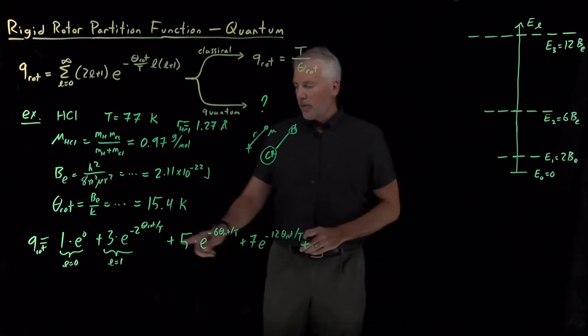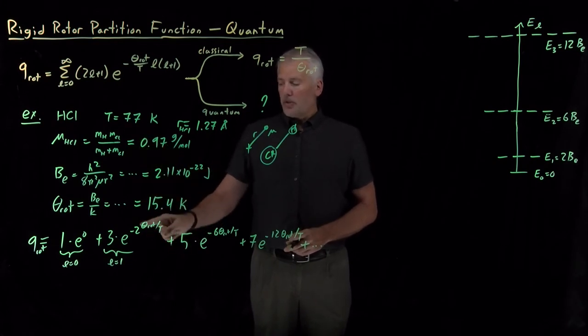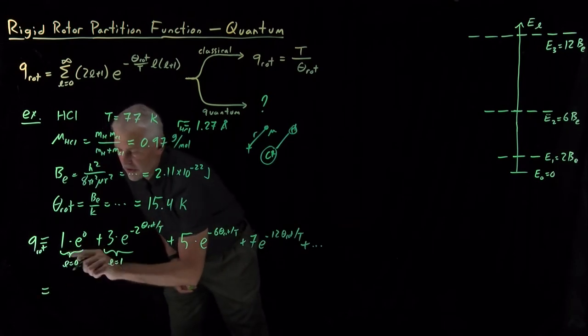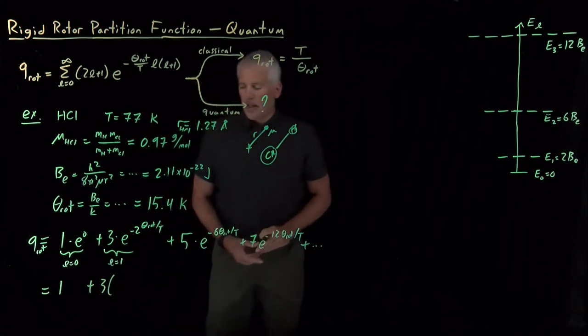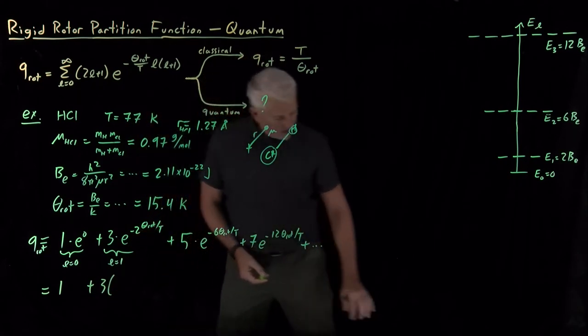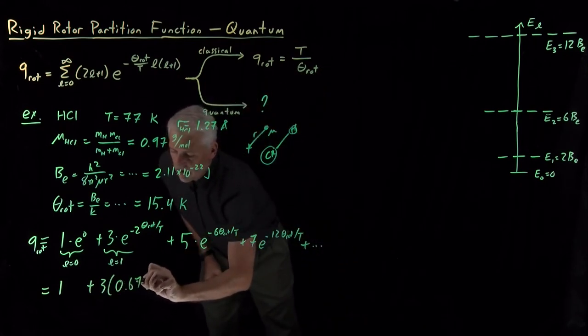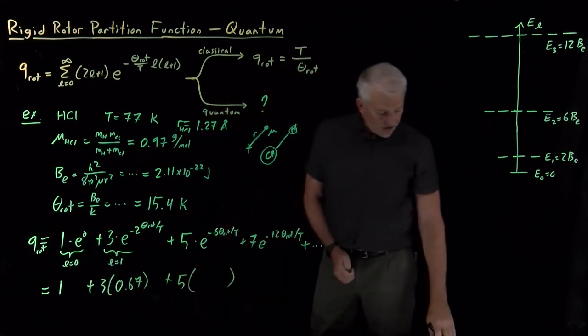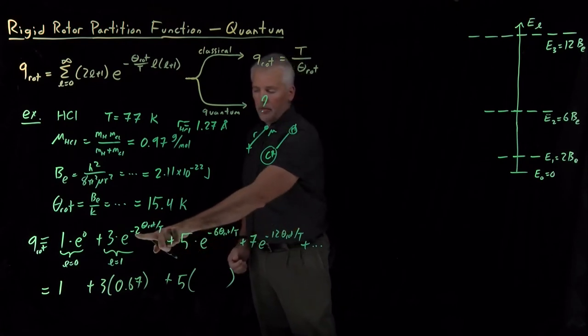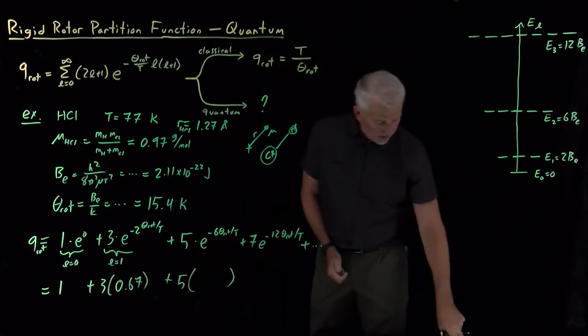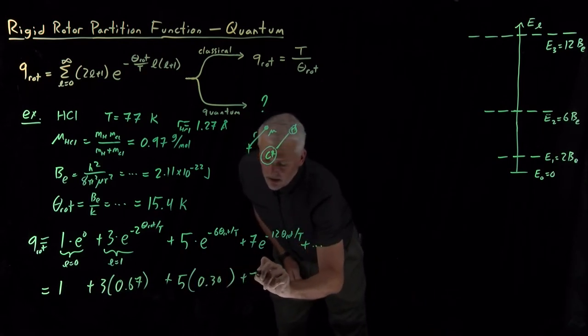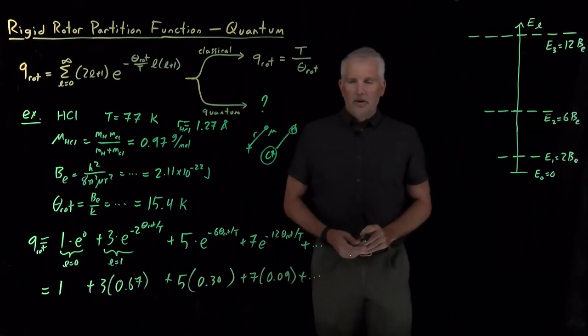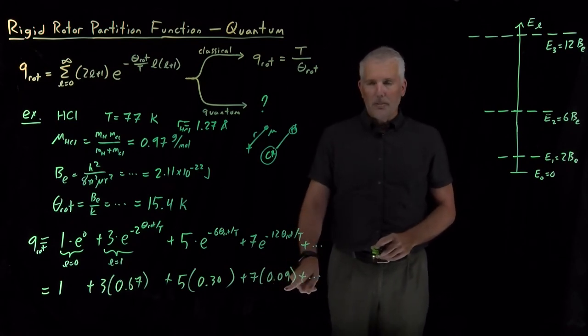But if we begin to stick numbers in, now that we know what theta rotational is, 15.4, we know the temperature, so this ratio, 15.4 over t. If we plug these numbers in, the first term, one times one is one. The second term, I've got three times e to the sum, pretty small number, that works out to be 0.67. The next term will be five times an even smaller number, because this e to the minus six has become more negative than e to the minus two. So this even smaller number, that's 0.3. And then the next number, the Boltzmann factor is 0.9, and so on. So you can begin to see what's happening here.